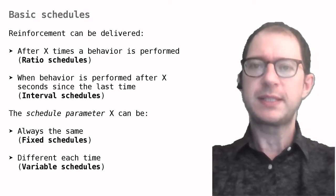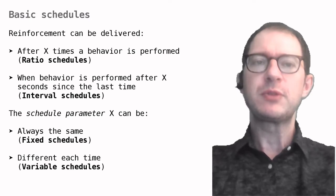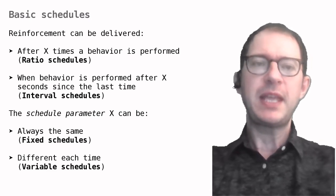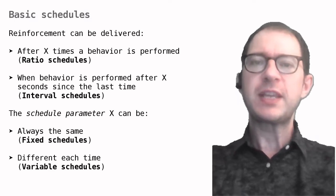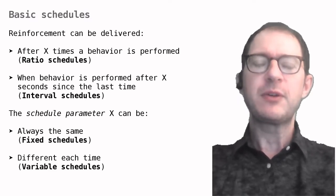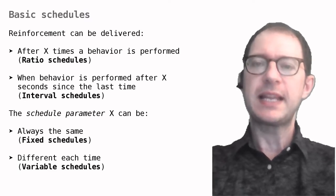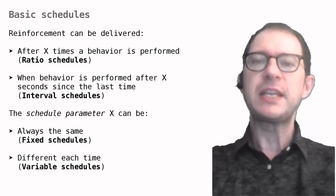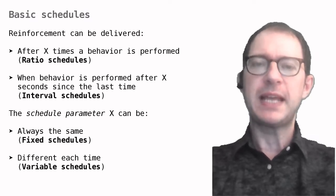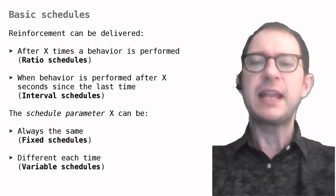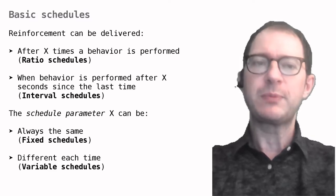There are two factors that go into these schedules. One is the rule used to give rewards. You can schedule a reward every X times a behavior is performed, in which case you have a ratio schedule, or when behavior is performed after some time X since the last behavior. In this case you have an interval schedule. So ratio schedules are based on the number of times you perform a behavior and interval schedules on when you perform a behavior.